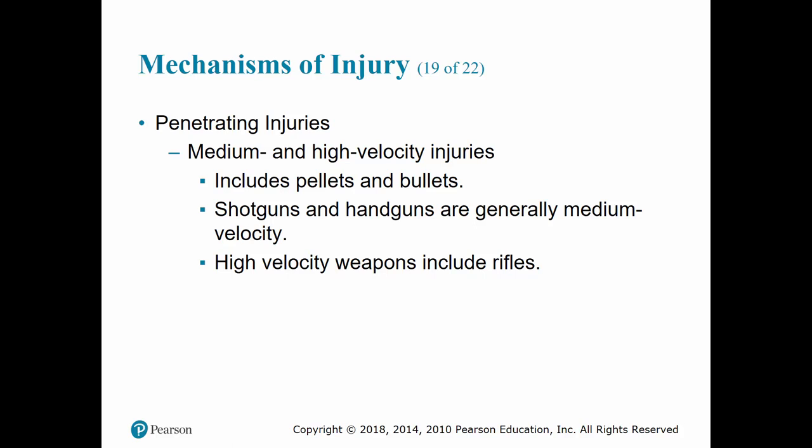Shotgun wounds differ significantly from rifle or handgun wounds because shotguns have multiple pellets that spray in a pattern. These multiple pellets increase the impact surface area, thus increasing the amount of energy transferred to the tissues. Close range shotgun wounds can cause devastating tissue damage.